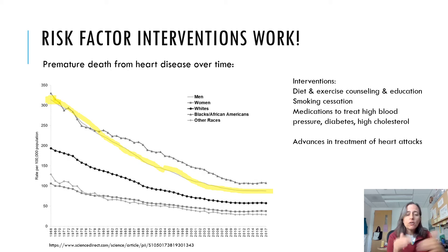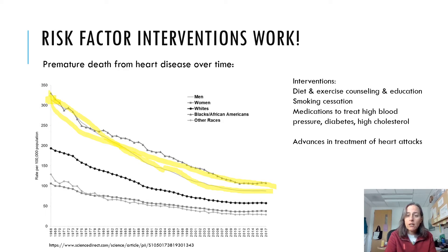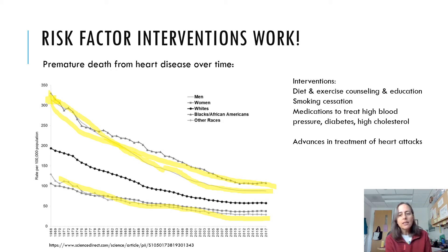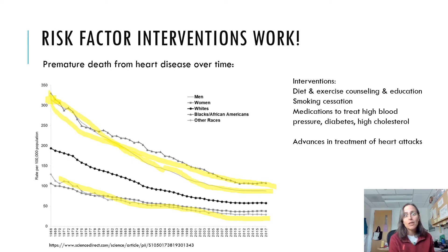When I was young, people in their 50s and 60s were dropping dead of heart attacks all the time. Now it still happens, but it's rare. The different lines show different population groups. Men have the highest incidence still of premature death, as do African Americans. Women are at a lower biological risk. All of these interventions — diet and exercise counseling, smoking cessation, treating high blood pressure, diabetes, and high cholesterol, plus advancements in stents and angioplasty — have contributed, but a lot of this improvement is due to risk factor modifications.